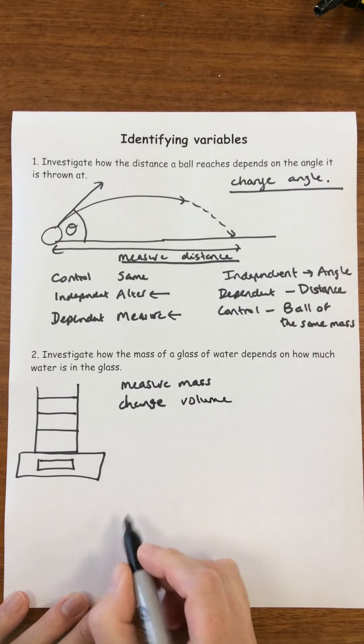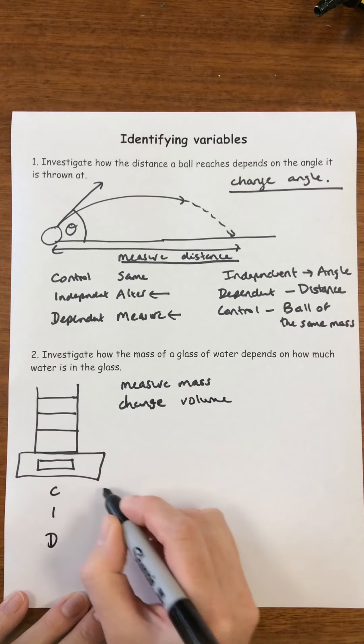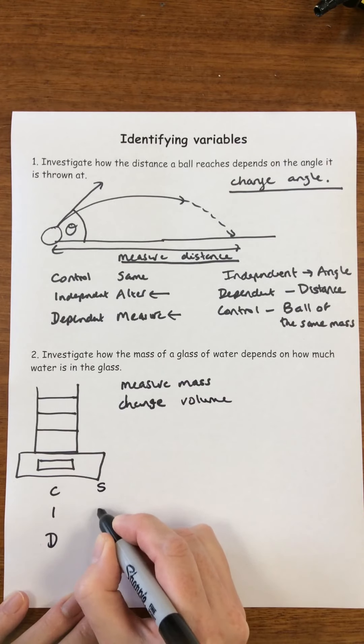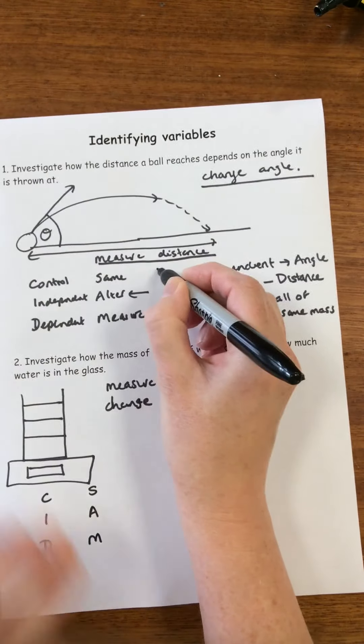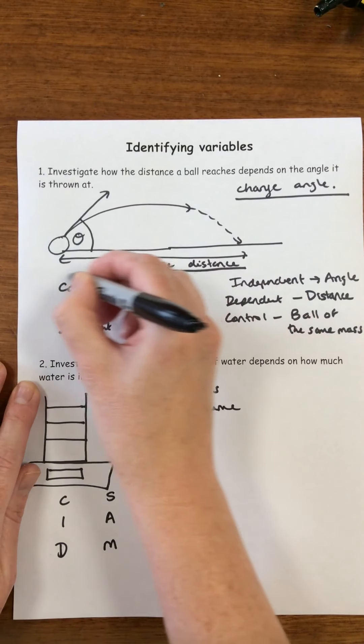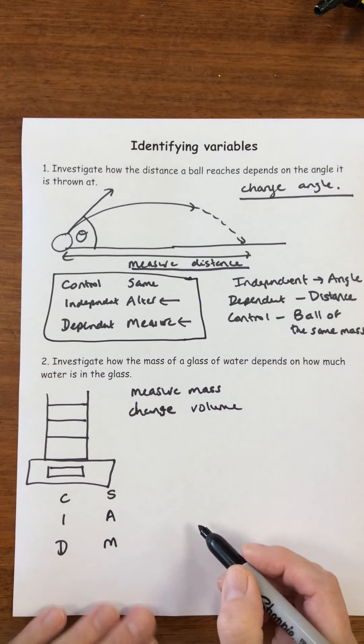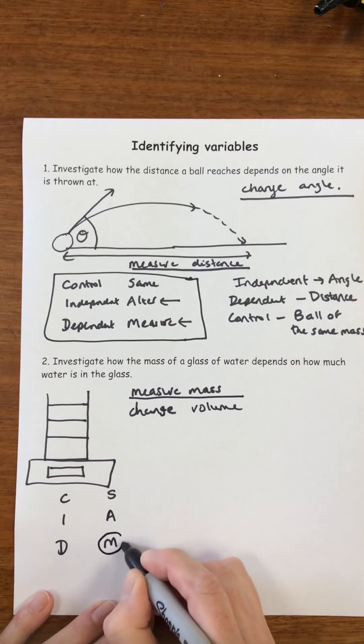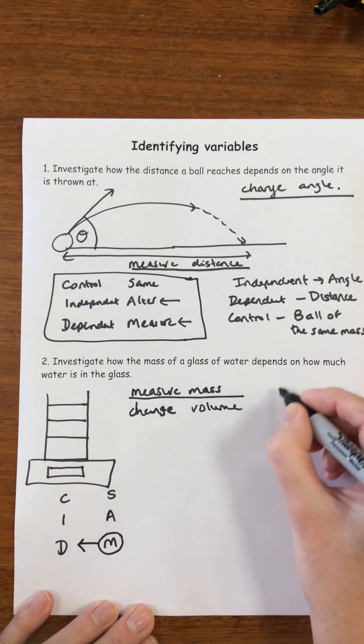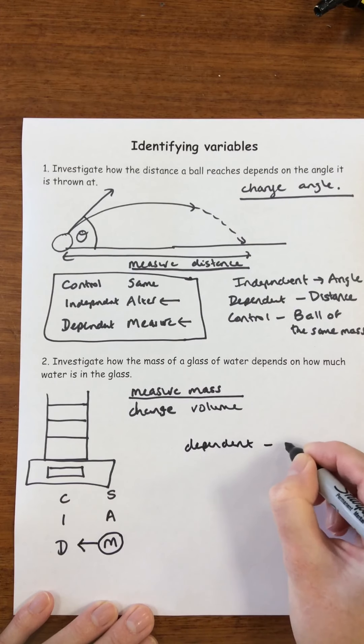So let's have a look at our Sid and Sam again. We have our control, independent and dependent, just the same as at the top of the page. We've already said that we're going to measure the mass. And if we look at our M, that is our dependent variable. So our dependent variable will be the mass.